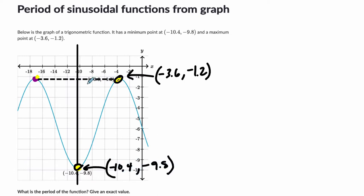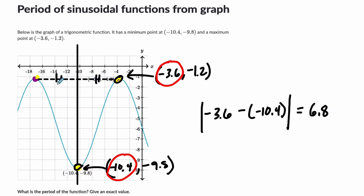We're concerned with that horizontal distance. So I'm looking at negative 3.6 minus negative 10.4, and yes, you can subtract in either order because what you're going to want to do is take the absolute value of that difference, and that will tell you how far apart these two points are. So in this case, that's 6.8 units, and that's half of our period because this length and this length are equal.